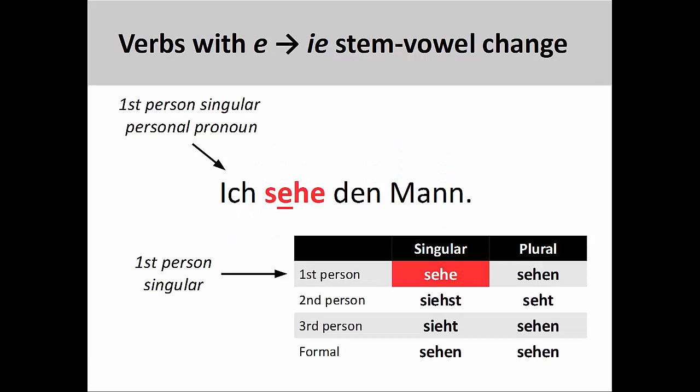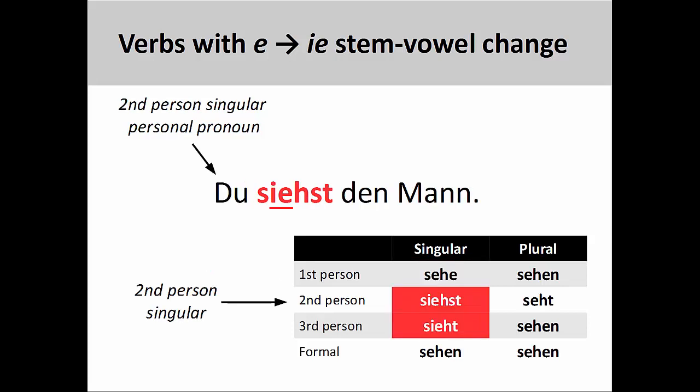The first group has a stem-vowel that changes from e to ie. So although the first-person singular form of sehen would be sehe — as in 'ich sehe den Mann' (I see the man) — the second-person singular form would be siehst, as in 'du siehst den Mann' (you see the man). The third-person singular form would be sieht.